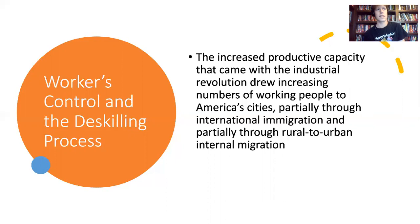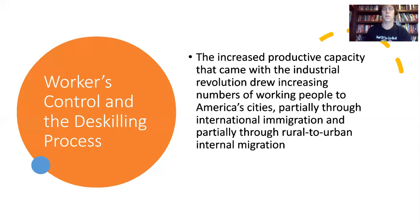As America is industrializing and as there's this demand for more labor in newly urbanizing, industrializing, growing cities, America is going to see a lot of immigration. Some of this is going to be international — immigrants coming from parts of Europe, East Asia, all over the world — but there's also going to be a lot of rural-to-urban internal migration. People leaving family farms and smaller communities to go toward cities where job prospects are better.